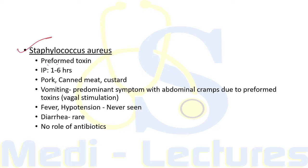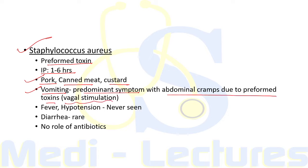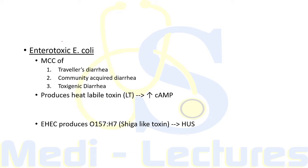Staphylococcus aureus is again a preformed toxin with incubation period of one to six hours, due to eating pork, canned meat, and custard. The clinical feature is predominantly vomiting with abdominal cramps due to vagal stimulation by the preformed toxin. Fever and hypotension are never seen, and diarrhea is also rare. There is no role of antibiotics. Enterotoxigenic E. coli does not have preformed toxins and falls in the category of enterotoxins.